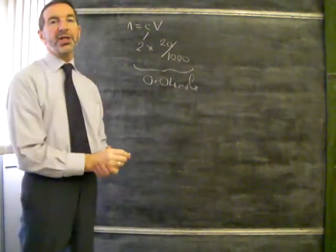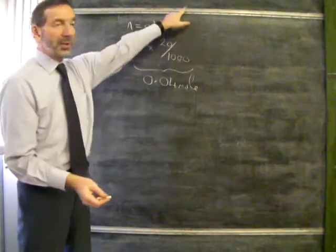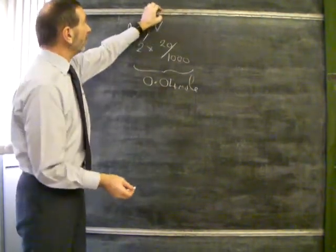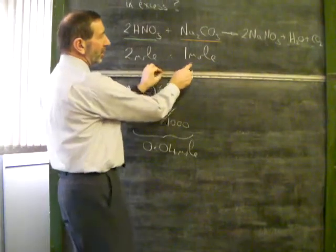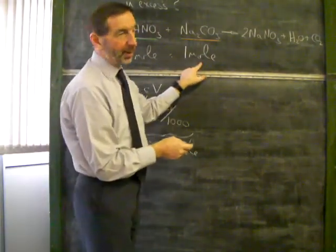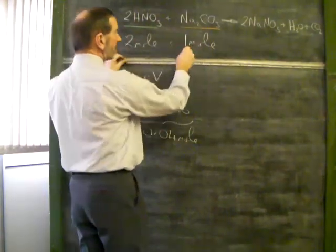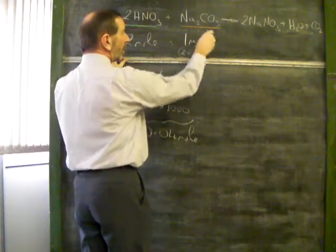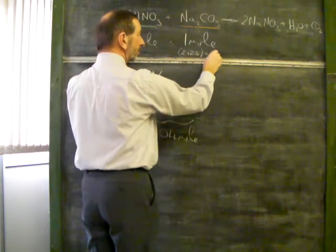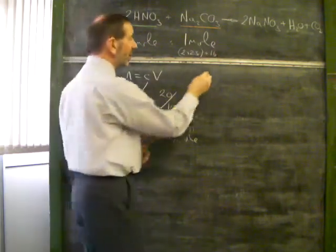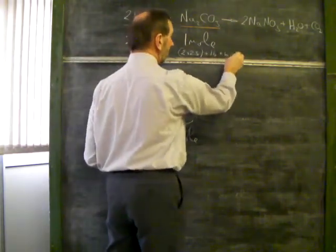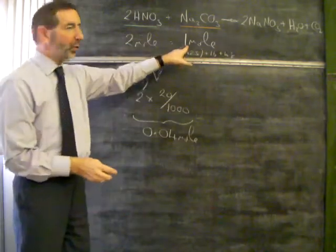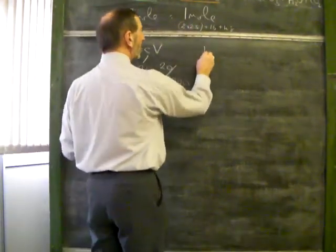Now we need to do the same thing with the other reactant. How much sodium carbonate do we have? We can use the data to see what 1 mole of sodium carbonate weighs. We've got 2 times 23, 1 carbon that's 12, and 3 oxygens - 3 sixteens is 48. It turns out that 1 mole of sodium carbonate weighs 106 grams.